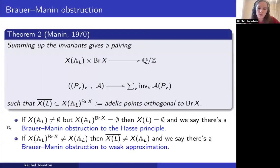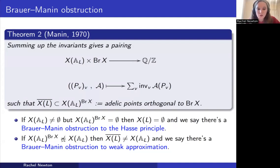The Brauer-Manin set can also obstruct weak approximation. If the Brauer-Manin set is not equal to the full set of adelic points, then recalling that the closure of the rational points is contained in the Brauer-Manin set, the closure of rational points is contained in a smaller set, so rational points are not dense in the adelic points. In this case we say there's a Brauer-Manin obstruction to weak approximation.